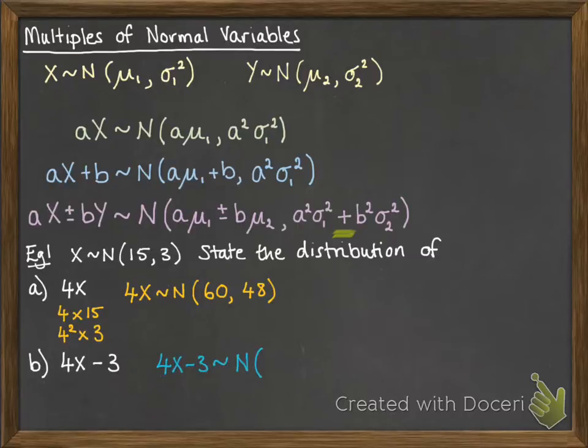Now for 4X minus 3, we know that is also normally distributed. The mean will be 4 times 15 and take away 3. However, the minus 3 doesn't affect the variance. So we keep that at 4 squared times 3 being 48.